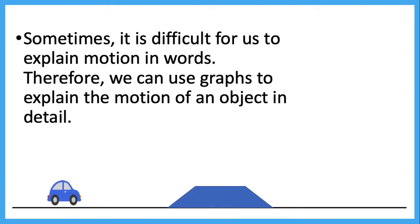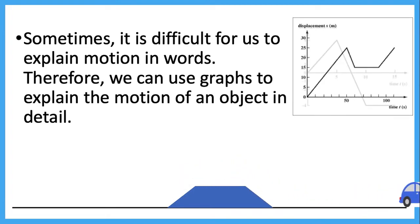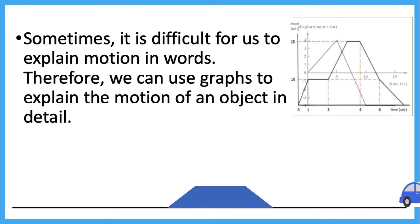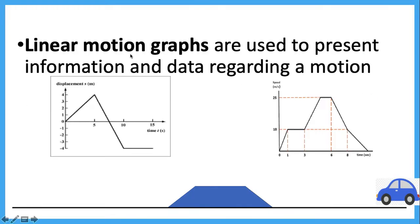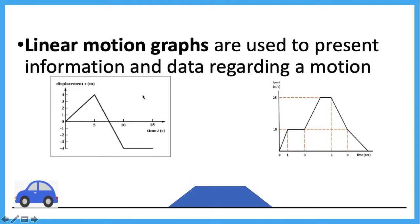Sometimes it is difficult for us to explain motion in words. Therefore, we can use a graph to explain the motion of an object in detail. Linear motion is a motion of an object in a straight path. Therefore, a Linear Motion Graph is used to present information and data regarding the motion of an object.